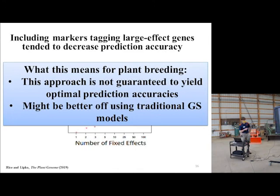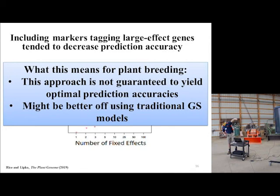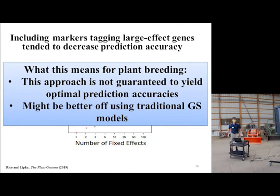I drew a horizontal arrow at a Y coordinate of zero and note how most of the dots are below zero. What that is saying is that more often than not, for this particular result, we are seeing worse performance when we account for these large-effect genes than when we don't. So what does this mean for plant breeding? This approach of accounting for more specific genes is indeed very helpful for certain situations. It is not a blank-check guarantee that you're always going to get improved prediction accuracy. So in some situations, we might be better off using a traditional genomic selection model.